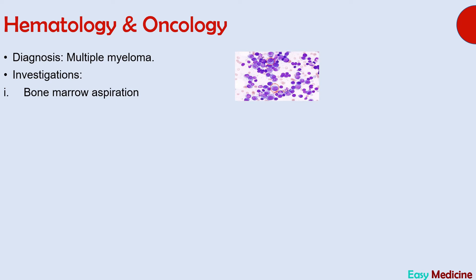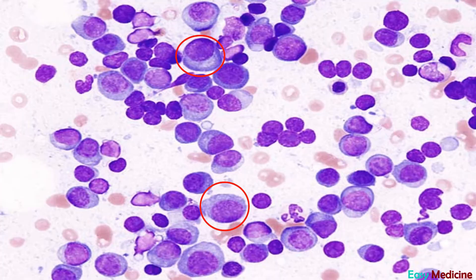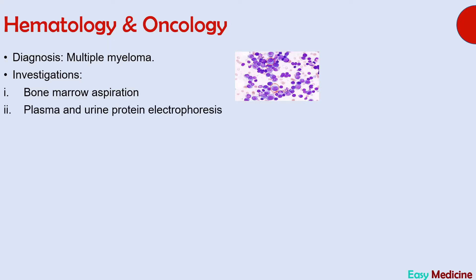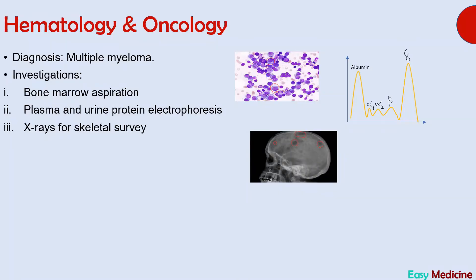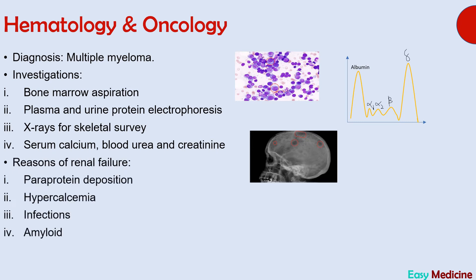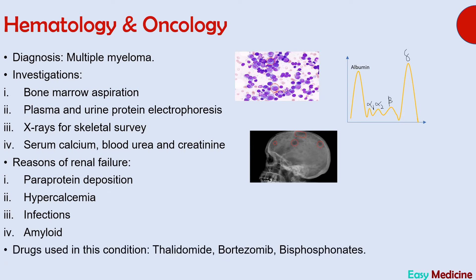On bone marrow aspiration, plasma cells are increased. The second investigation is plasma and urine protein electrophoresis, which shows an increase in gamma globulins — normally the peak of gamma globulins is similar to alpha and beta globulins, but in multiple myeloma gamma globulins are markedly increased. X-rays for skeletal survey show lytic or lucent lesions. Measurement of serum calcium, blood urea, and creatinine is also done. The four causes of renal failure in multiple myeloma are paraprotein deposition, hypercalcemia, infections, and amyloid deposition. Drugs used include thalidomide, bortezomib, and bisphosphonates.